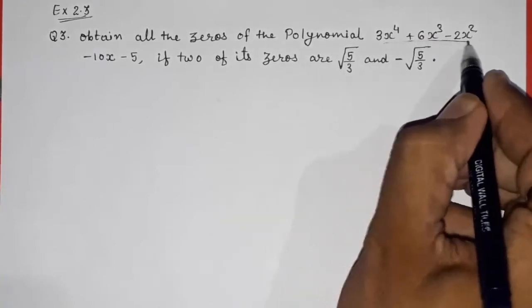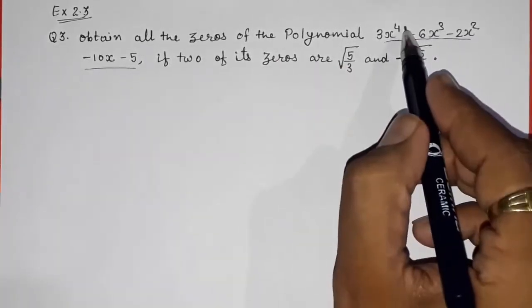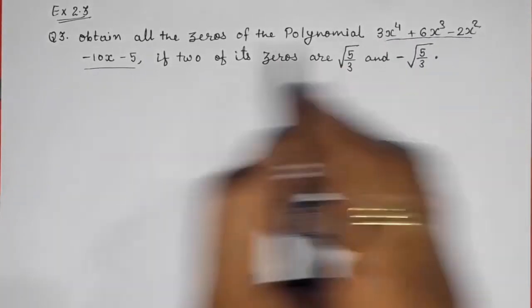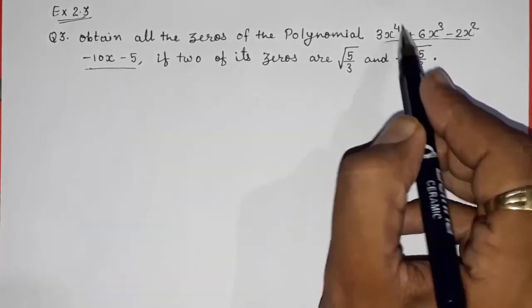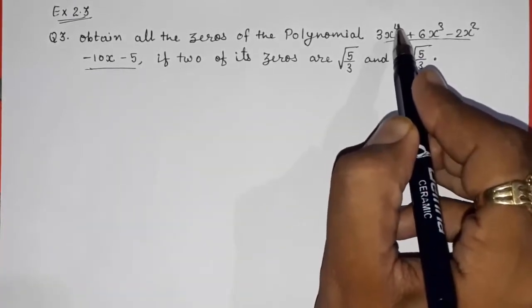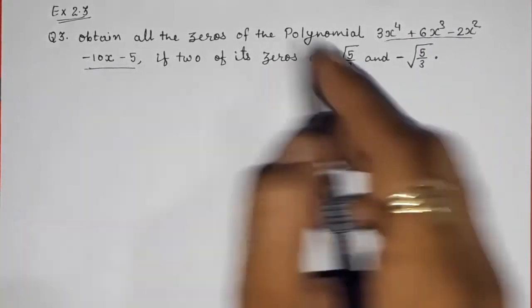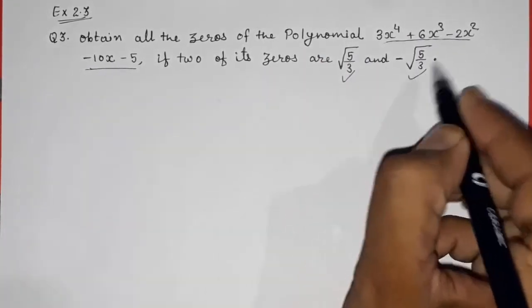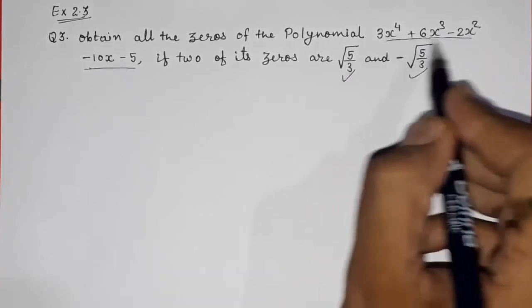From the question itself we know that we need to find all zeros of this polynomial. Its power is 4, or you can say the degree is 4, so we will get 4 zeros from this polynomial. Out of those 4 zeros, 2 zeros are given to us and we have to find the other 2 zeros.